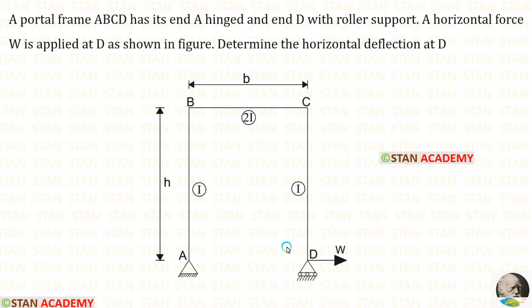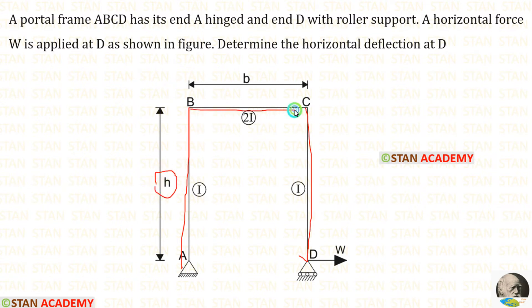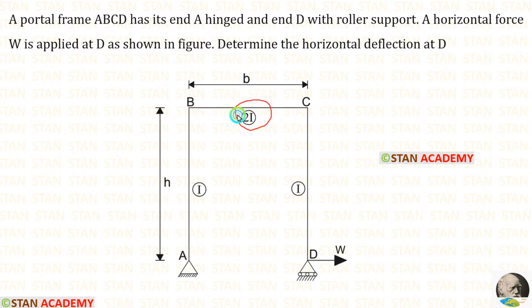In this question, a portal frame is given. At point D, a horizontal load W is applied. We have to find the horizontal deflection at point D. For AB and CD, height is given as H. For BC, the length is given as B. The moment of inertia for BC is 2I, for AB is I, and for CD is also I.